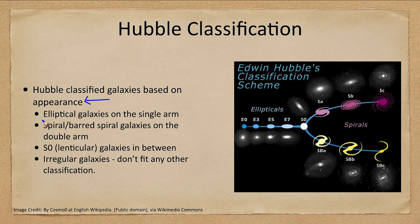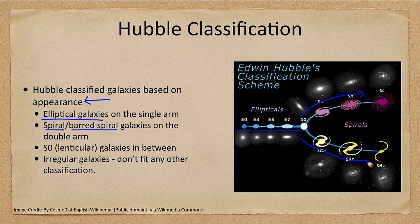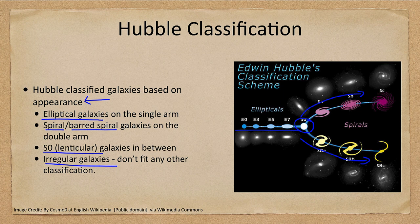In the classification, elliptical galaxies appear on one arm, which then splits into spiral and barred spiral galaxies. There were also the S0 or lenticular galaxies, which form a border between types, and irregular galaxies, which did not fit any other classification.